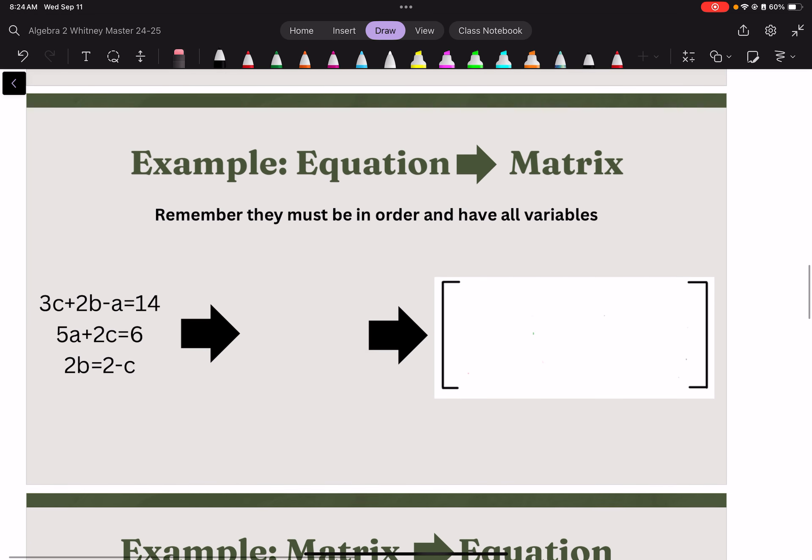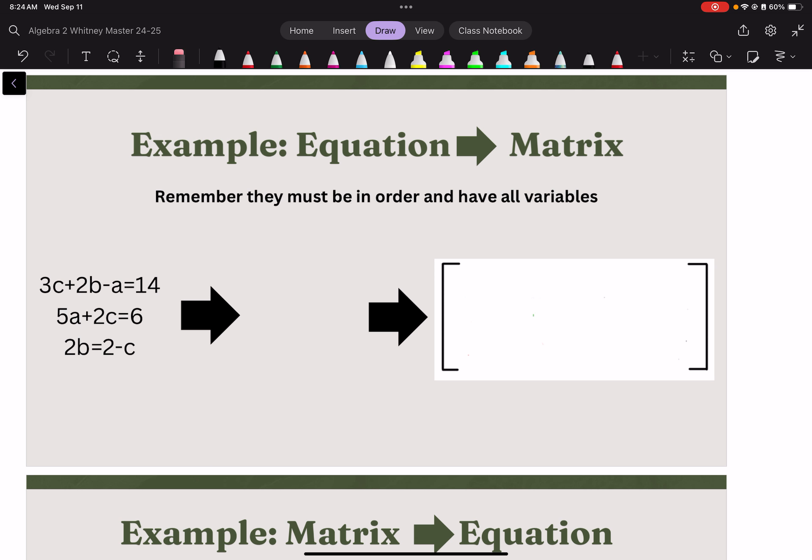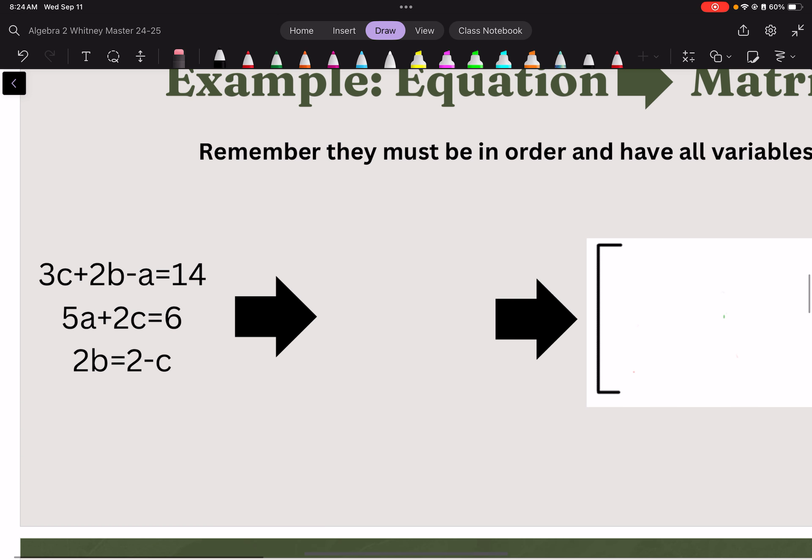So, if we want to put things into a matrix, what's the rules for them? Well, they have to be in standard form. Everything has to be in order. So, like, for this one, it's kind of out of order right now. Let's play with a first. So, negative a, there's b, there's c, then equals our number. So, the next one would be 5a plus no b plus 2c equals 6. The last one is no a plus 2b. The c would have to go to the other side. So, we'd have positive c equals 2.